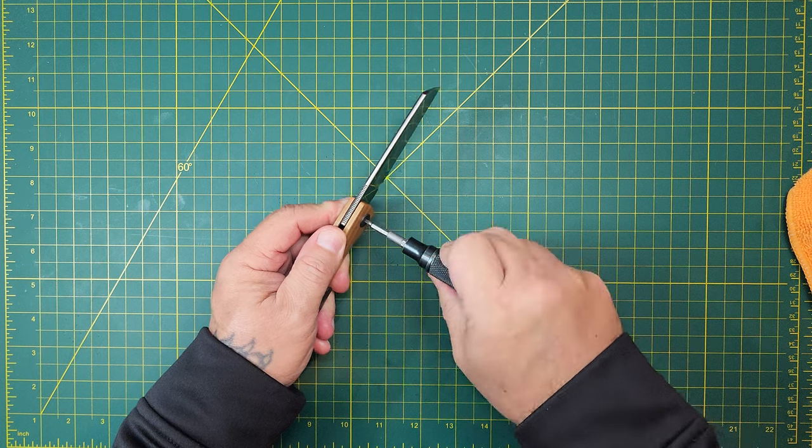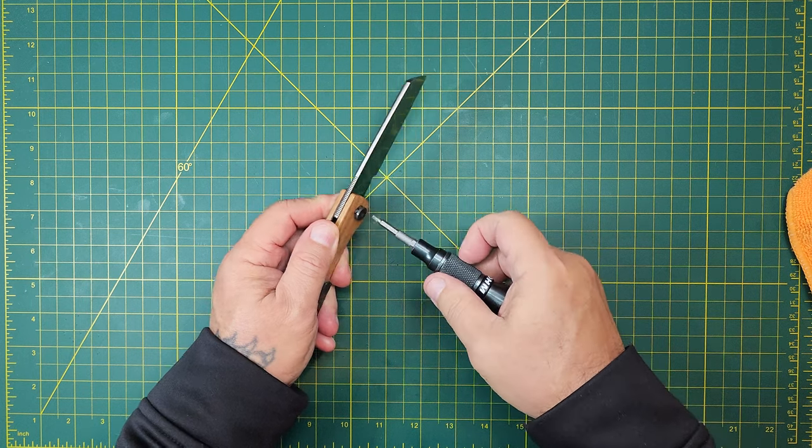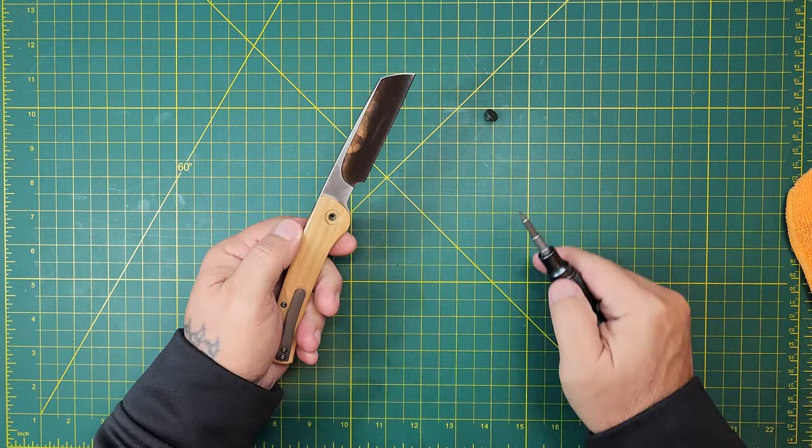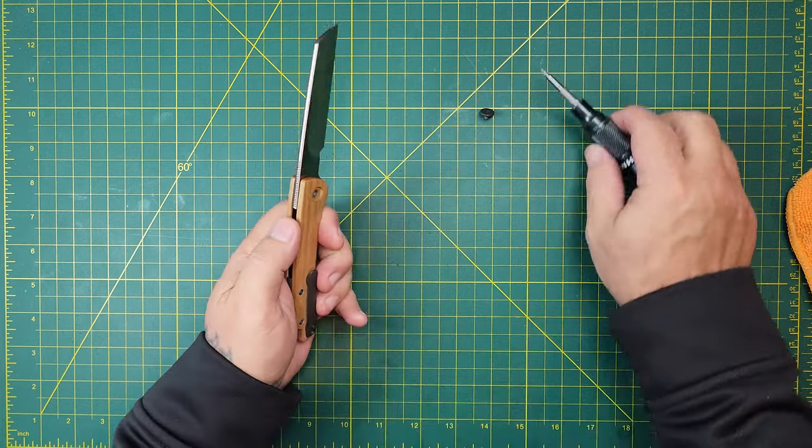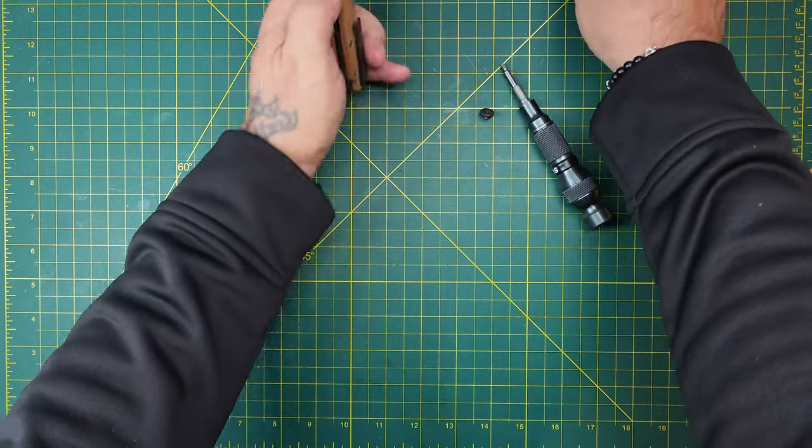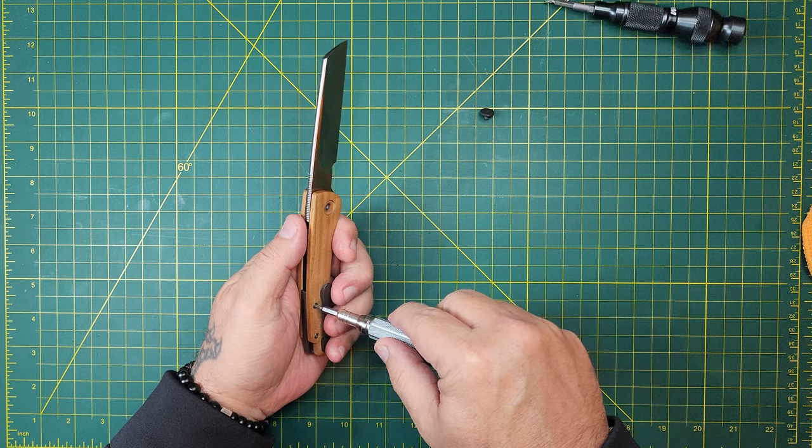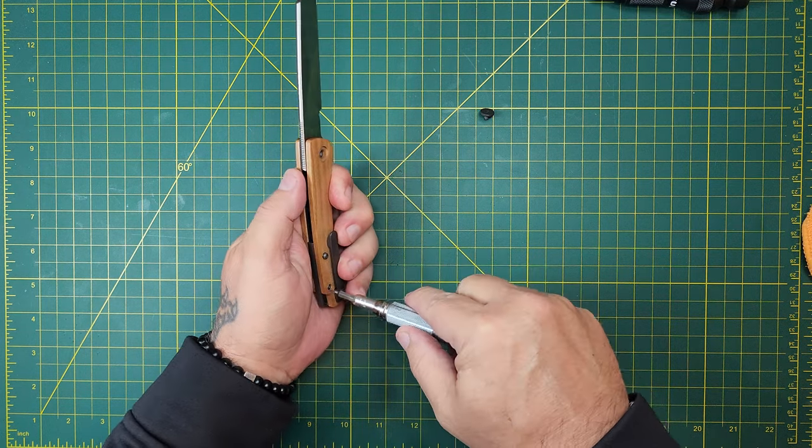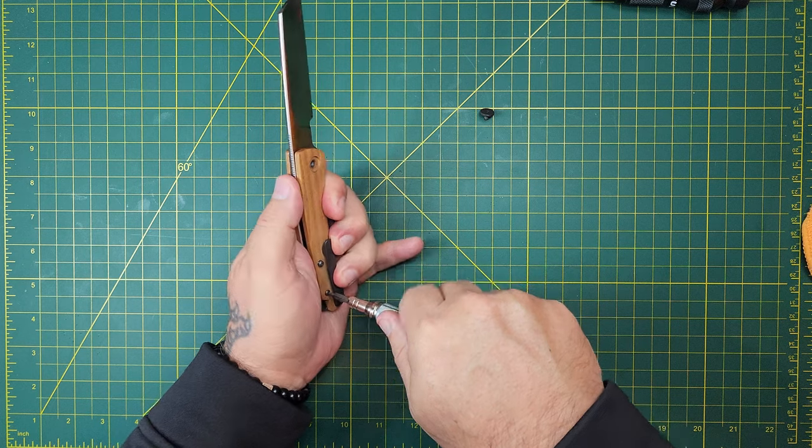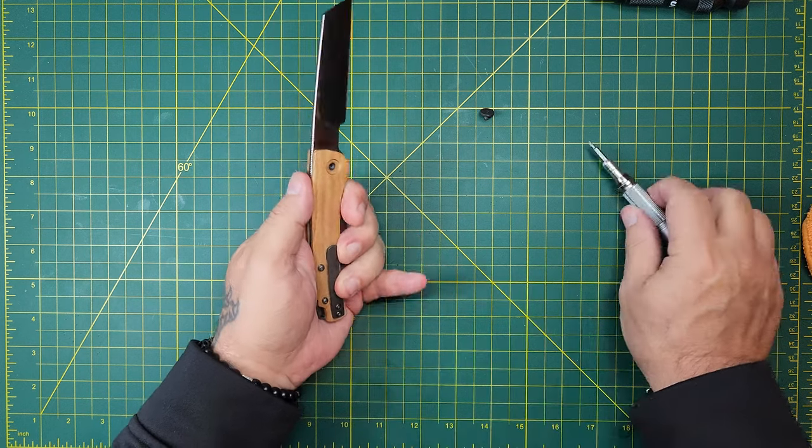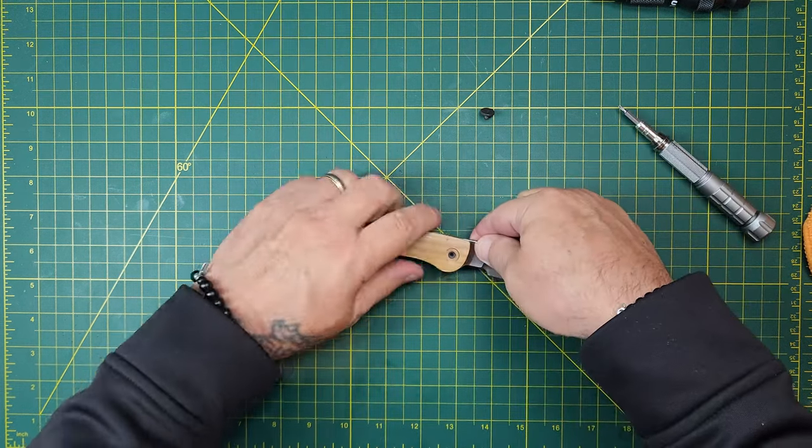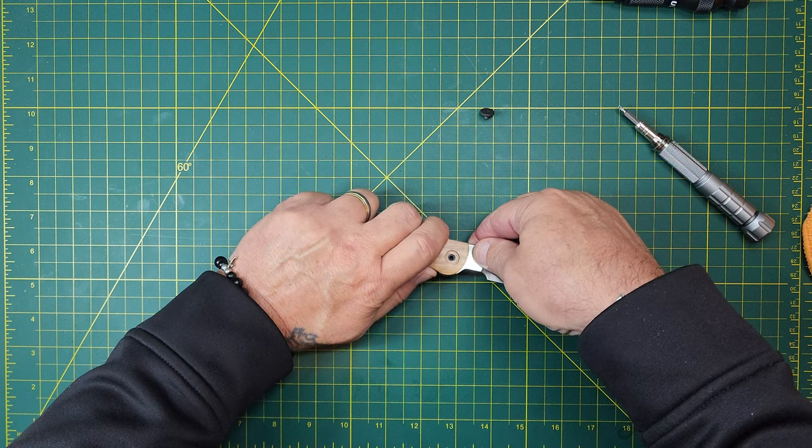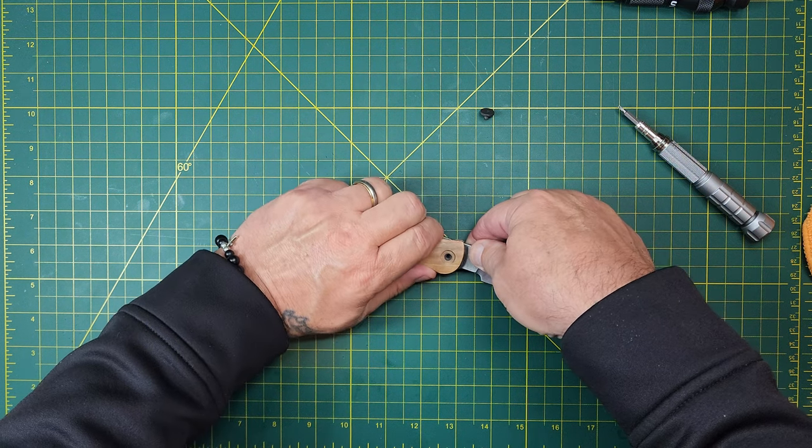So this knife is going on the for sale list. This is going to be part of the great purge. If you're interested in the knife, just keep your eyes out because it'll show up on that list. I'll drop information for it, but it'll show up at the Discerning Man Facebook page.